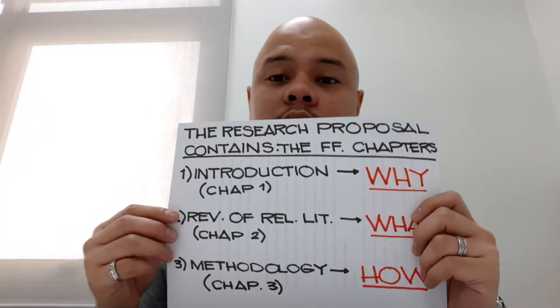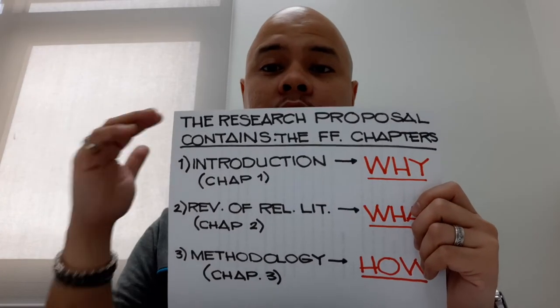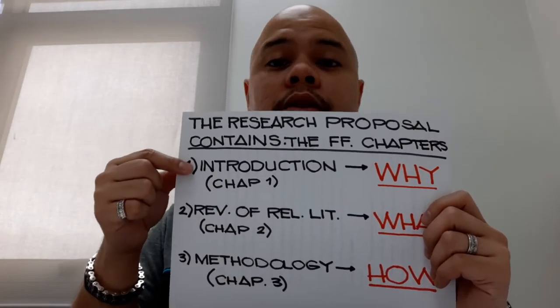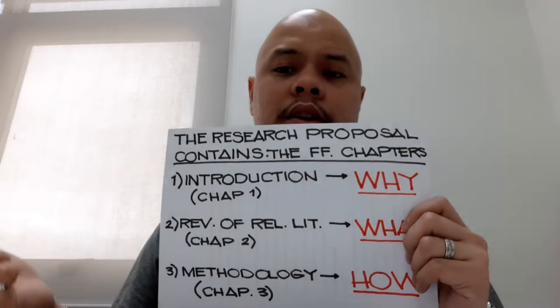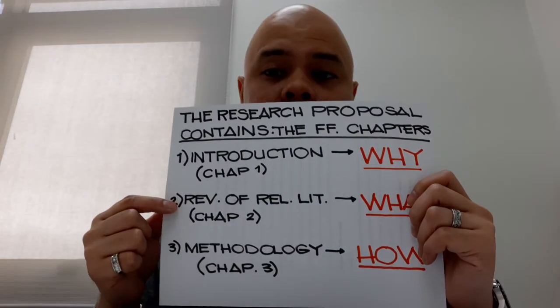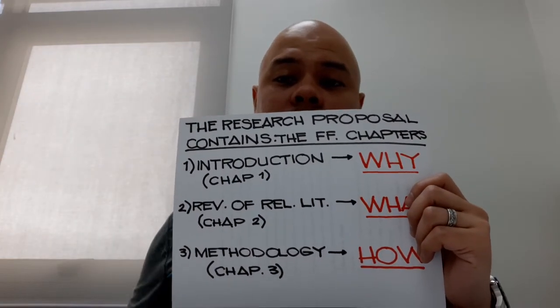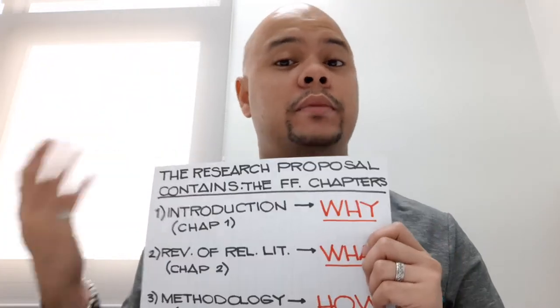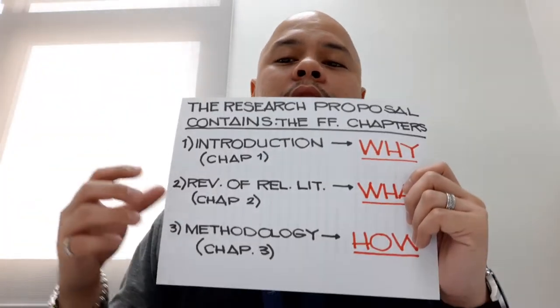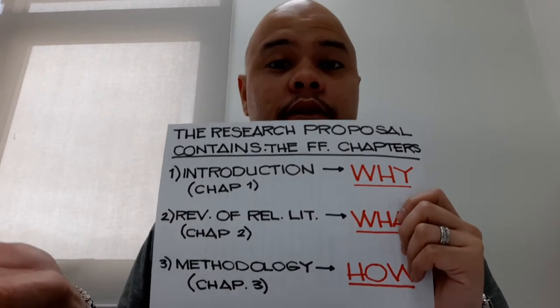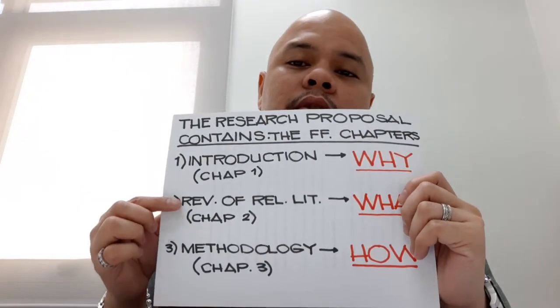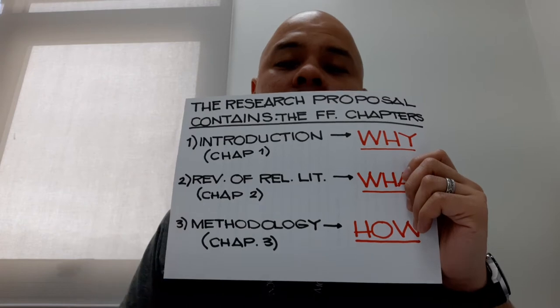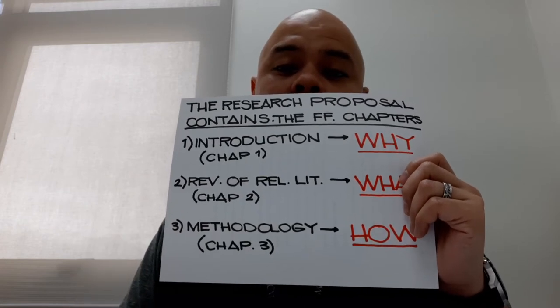Moving on, the next question is why do we need to discuss those three? Because the content of your research proposal is usually divided into the following chapters. First, you're going to discuss chapter one, or the introduction. Two, chapter two, or the review of related literature — or in some institutions it might also be chapter three, but for the sake of this video let's assign chapter two as the review of related literature. And lastly, chapter three, which is the methodology.